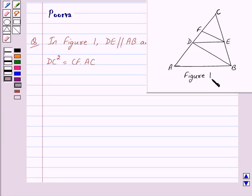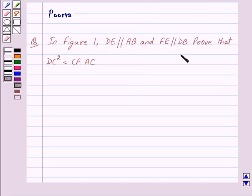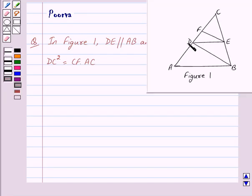In Figure 1, DE is parallel to AB and FE is parallel to DB. We have to prove that DC² equals CF times AC.